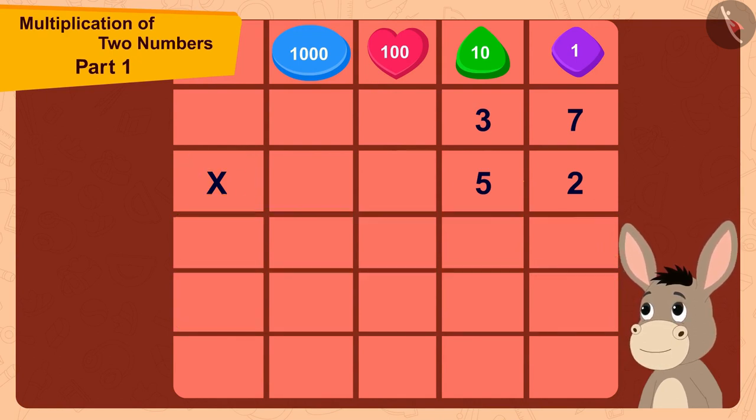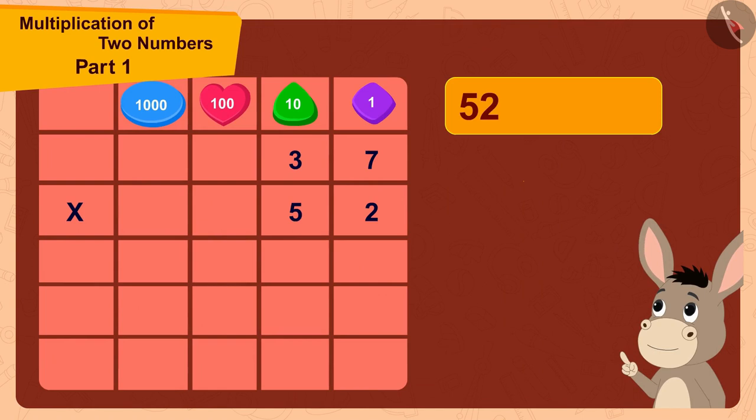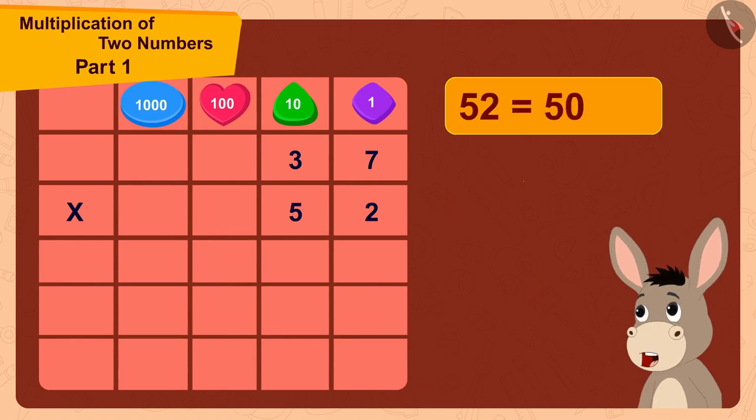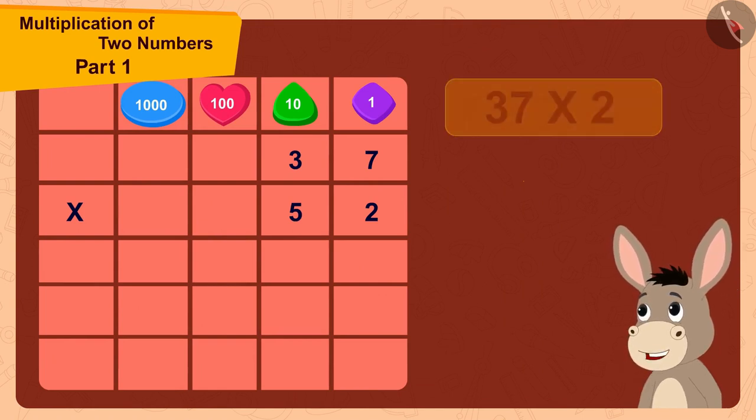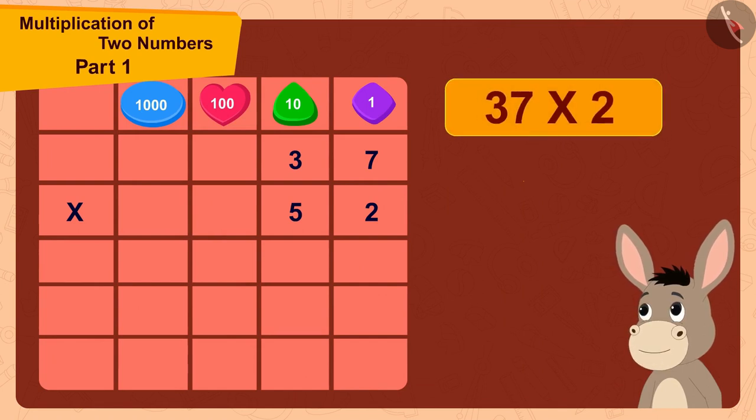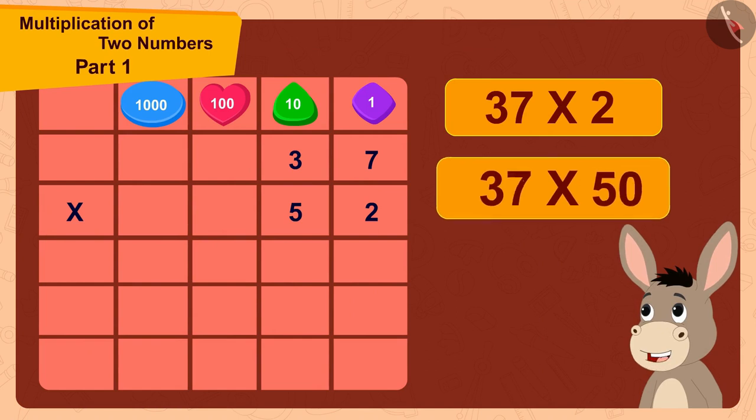52 is made by adding 2 to 50. So, first I will multiply 37 by 2 and then multiply it by 50.